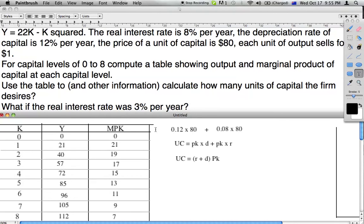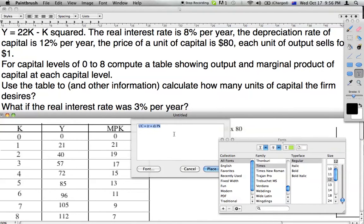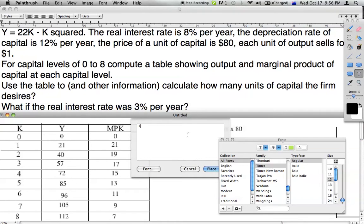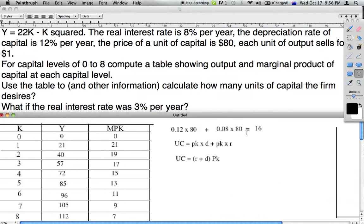I will calculate what this equals. We have 0.12 plus 0.08 times 80 equals 16, so our user cost of capital is 16.